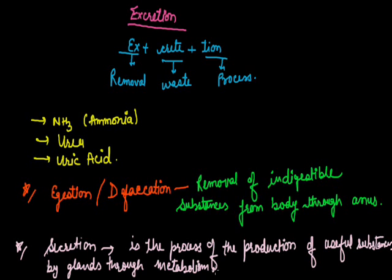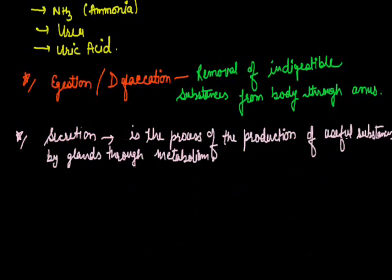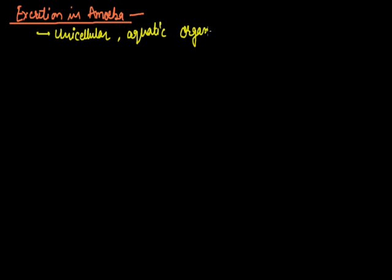Excretion is done in every organism—in plants, animals, and microbes. First of all, excretion in amoeba. Amoeba is a unicellular aquatic organism. There is no specialized structure in the amoeba's body to do this function. That is why this function is done through the plasma membrane.